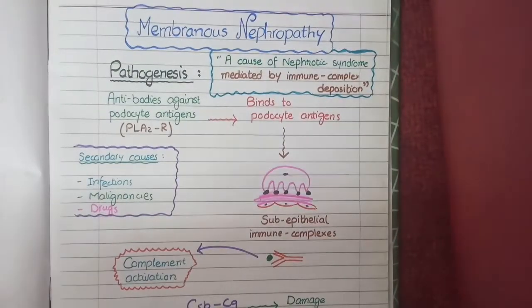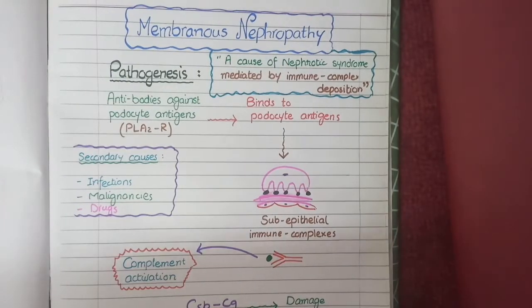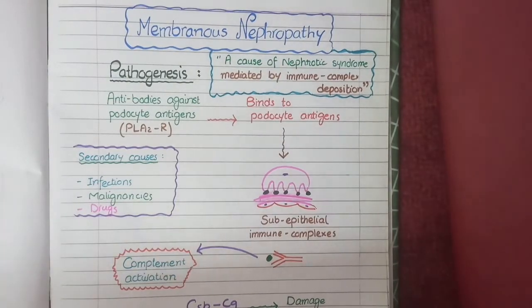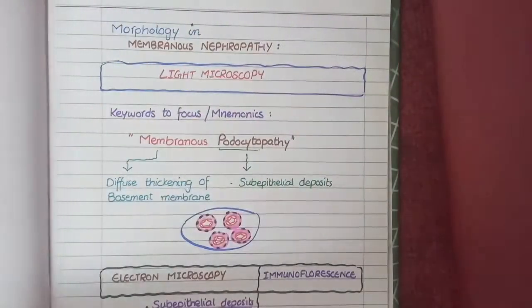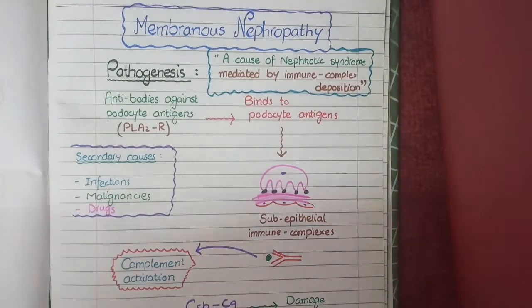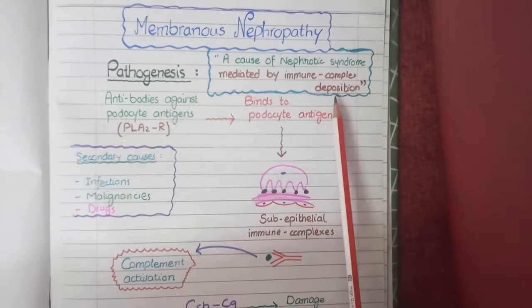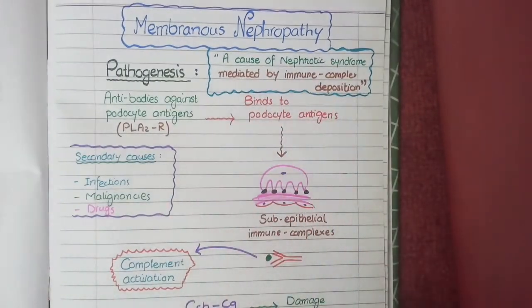In this video we will discuss the pathology of membranous nephropathy. We will study its definition and pathogenesis, then its clinical features, and finally its morphology in detail. Membranous nephropathy is one of the causes of nephrotic syndrome that is mediated by immune complex deposition and causes diffuse thickening of the basement membrane.